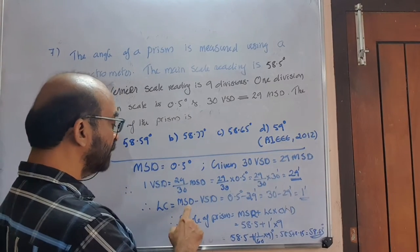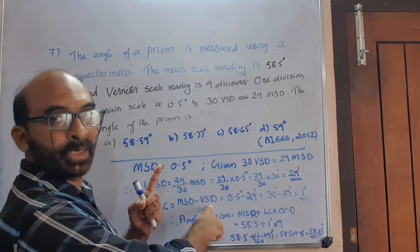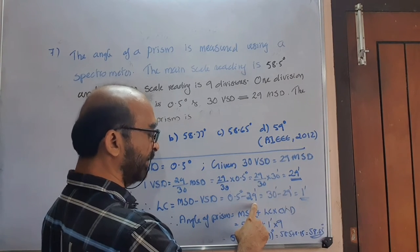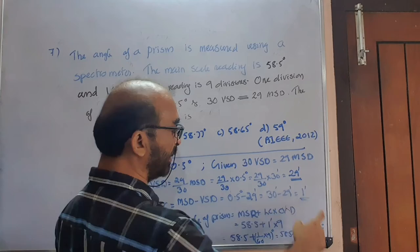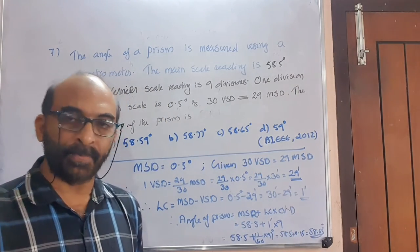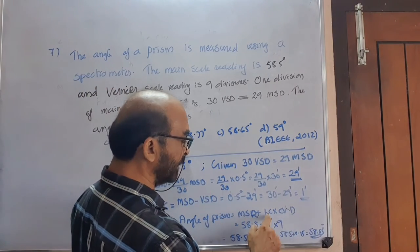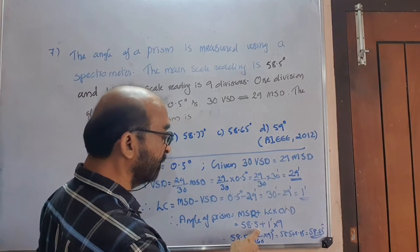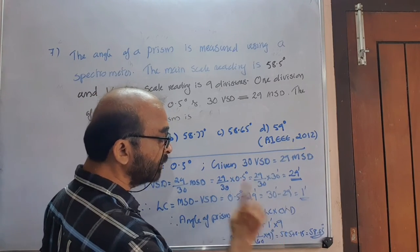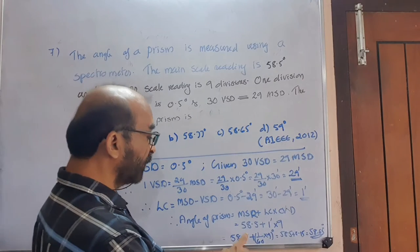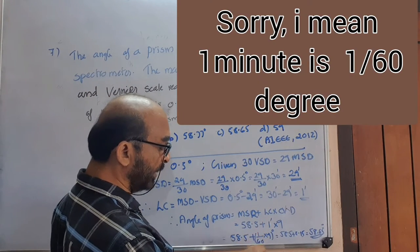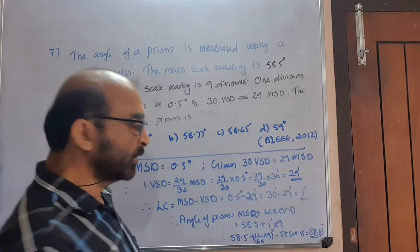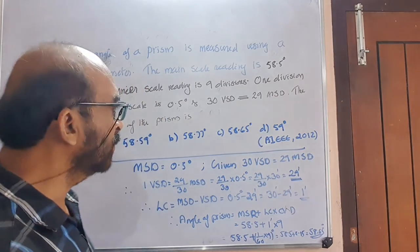Least count equals MSD minus VSD — it is a normal type since MSD is greater than VSD. So: 0.5 degree minus 29 minutes equals 30 minutes minus 29 minutes equals 1 minute. Applying the normal equation: angle equals main scale reading plus least count into coinciding vernier division equals 58.5 degrees plus 1 minute into 9. Converting: 1 minute equals 1 by 60 degree; into 9 equals 0.15 degree. So 58.5 plus 0.15 equals 58.65 degrees. Answer is C.